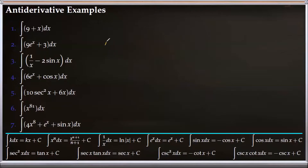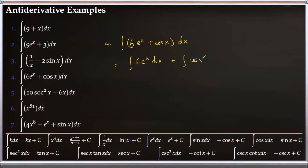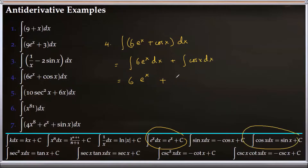For number four, we find the antiderivative of (6e^x + cos x) dx. Writing as two integrals: 6 times the integral of e^x, plus the integral of cos x. Using the formula for e^x we get 6e^x, and the antiderivative of cos x is sine x. So the answer is 6e^x plus sine x plus C.